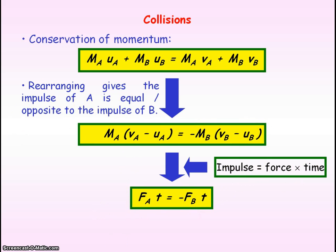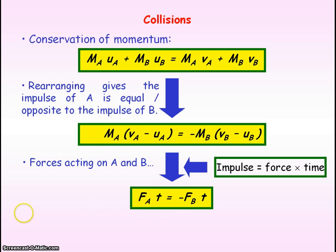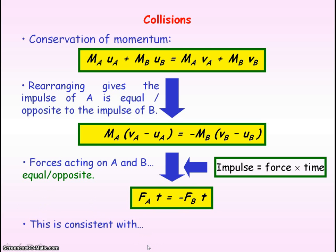In a collision between A and B, the time the force acts is the same for both of them, so we can cancel out the t's. This shows that in a collision, the forces acting on A and B are equal and opposite to each other. This is consistent with Newton's third law of motion, which states that if object A exerts a force on object B, then object B will exert an equal and opposite force on object A.